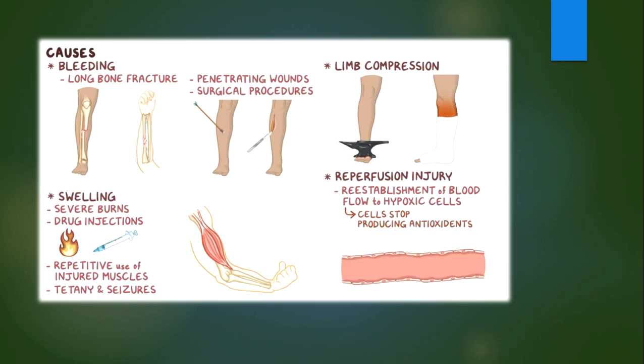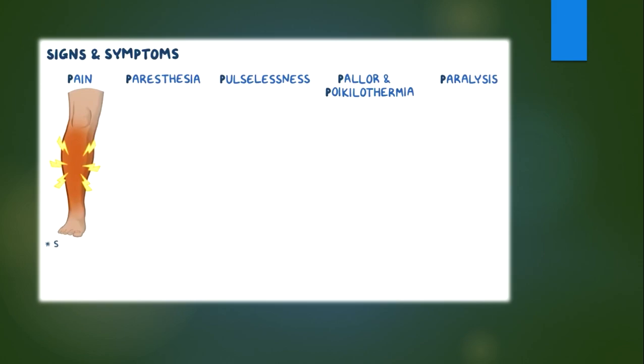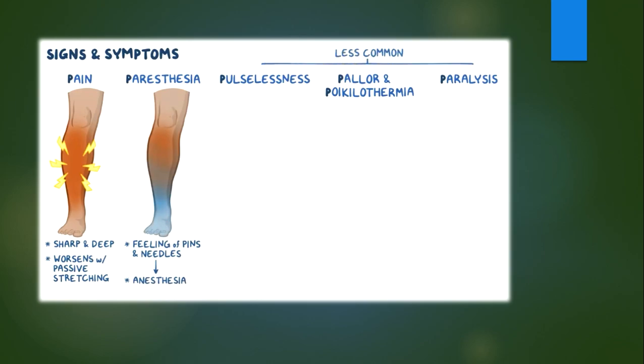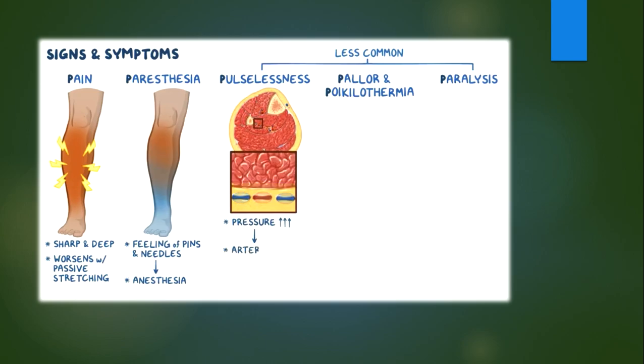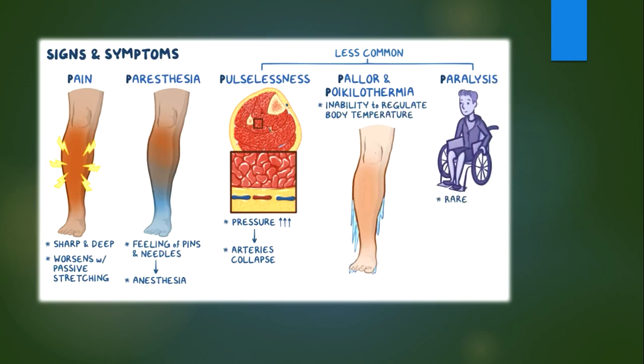Signs and symptoms of compartment syndrome can be remembered as the six Ps, which are pain, paresthesia, pulselessness, pallor, poikilothermia, and paralysis. The most common is pain, which is usually described as sharp and deep and worsens with passive stretching of the affected muscles. Pain is followed by paresthesia, which is an abnormal sensation like feeling of pins and needles or numbness that can even progress to anesthesia or loss of sensation. The other four Ps are less common, as pulselessness appears only when the compartment pressure is so high that it makes the arteries collapse. Then pallor of the skin can appear together with poikilothermia, which is the inability to regulate body temperature and usually presents as cold extremities. Paralysis is rare and suggests extensive damage to both the muscles and nerves.